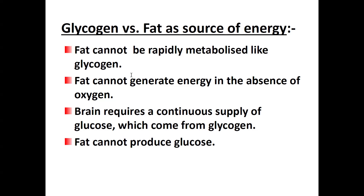The brain requires a continuous supply of glucose, which comes from glycogen. Since fat cannot produce glucose, if our body cannot break down glycogen to generate glucose, there is a possibility that the brain can cease to function. Therefore, glycogen is the fastest storage form among macromolecules, which can easily be mobilized to generate energy and produce glucose constantly needed by the brain.